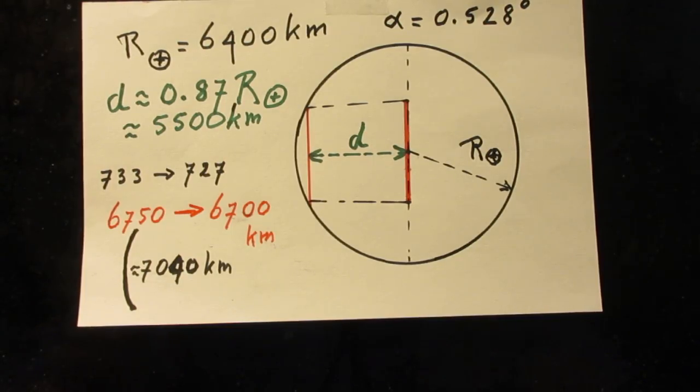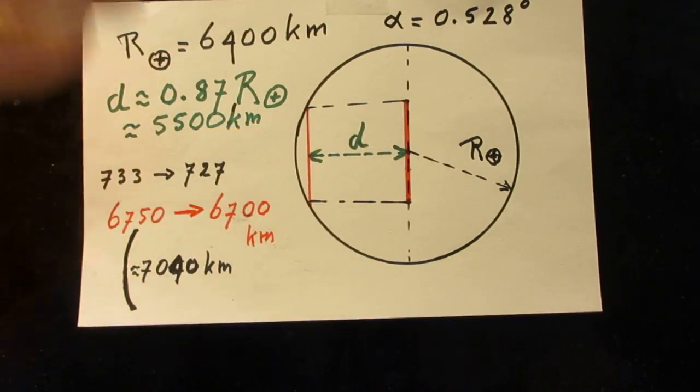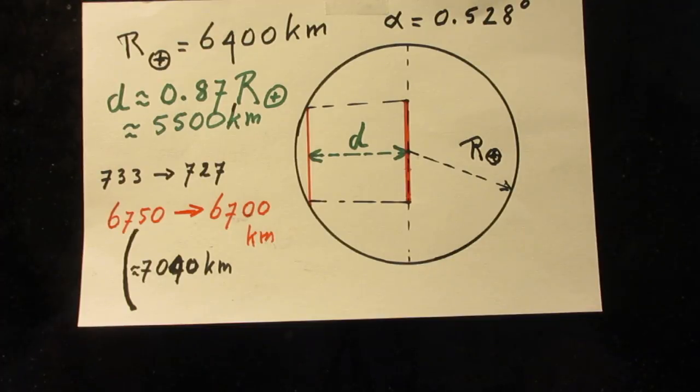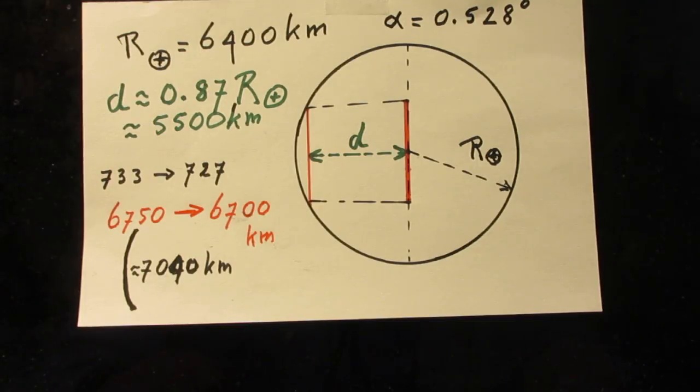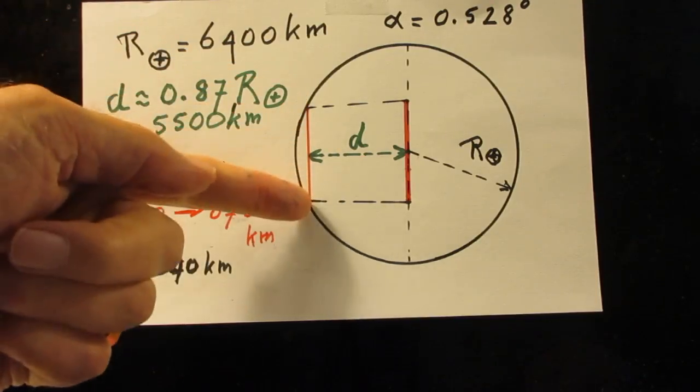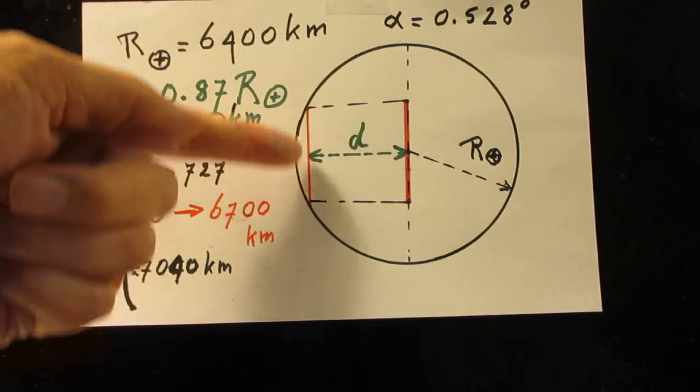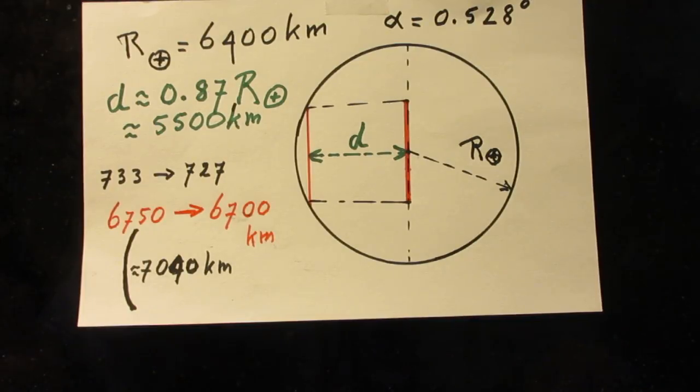So that means in the solution where I start from the crossover point, and if you don't remember what the crossover point is, you may want to watch my first solution again. The distance from the crossover point to the center of Earth was 733,000 kilometers. We should really replace that then to 727,000 kilometers. We move 6,000 kilometers. And if you do that, you'll find that the diameter of this penumbra here is a little less. It is 6,700 kilometers.